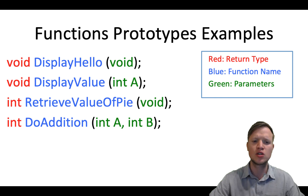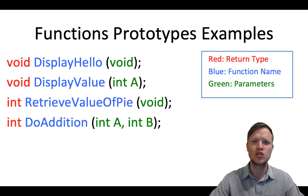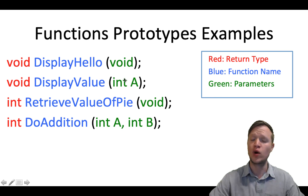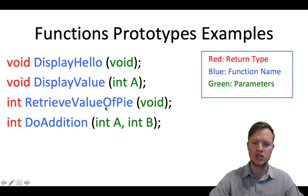In the round brackets we have our parameters. The parameters are the input into the function — we send values to the function and it uses those values to do certain calculations or statements. These parameters are enclosed in round brackets. In the first example there's void, meaning no parameters. The second example has int a, meaning one input variable of type int. In the last case we have multiple parameters — you are not restricted to one input, you can have multiple parameters.